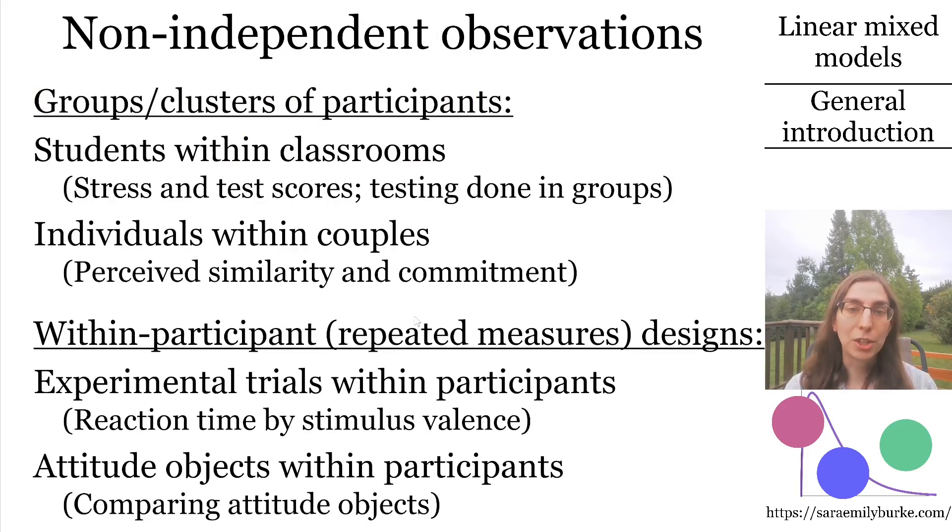The example studies I mentioned a moment ago were all cases where the observations are not independent, and the researchers know that the observations are not independent, and you could make a categorical variable to identify the observations that depend on one another. In the first example, that variable would be classroom, and it would have one category for each classroom where testing was done. In the next example, it would be couple, and it would have one category for each couple, a huge number of categories.